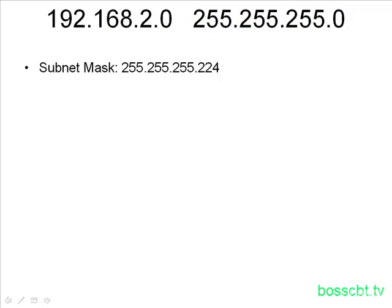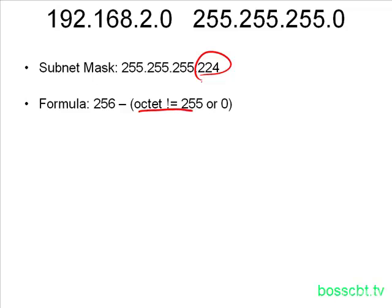The first thing, like we said, is to identify the octet that does not equal 255 or 0. That's pretty simple. Here it is, .224. So that's step one. Step two is not that much harder. We use our special formula here. The formula always looks like this: 256 minus the octet value that does not equal 255 or 0. If we do the math, 256 minus 224, we get our answer of 32. 32 is a very valuable number for us because essentially all of the subnets we're going to create are going to be in multiples of 32.